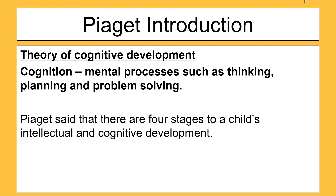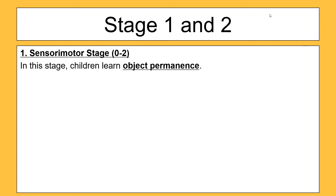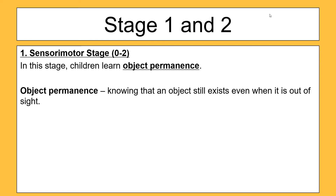Piaget said that there are four stages to a child's intellectual and cognitive development. The first stage is the sensory motor stage, and that's from naught to two years old. The key thing you need to know about this stage is that it's all about object permanence. Object permanence is knowing that an object still exists even when it is out of sight.